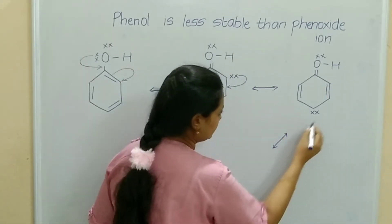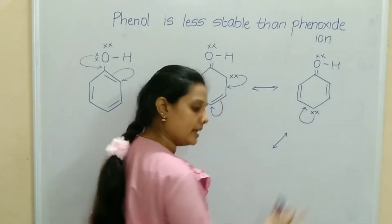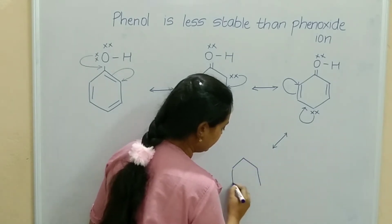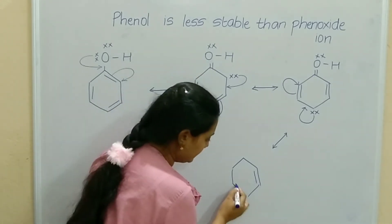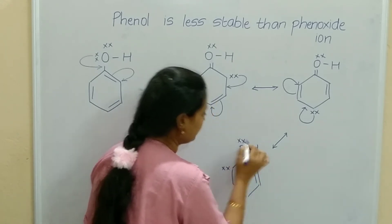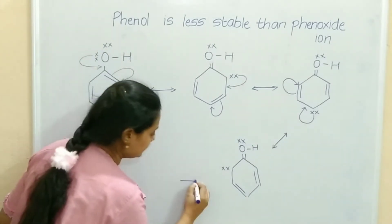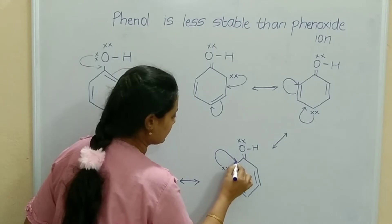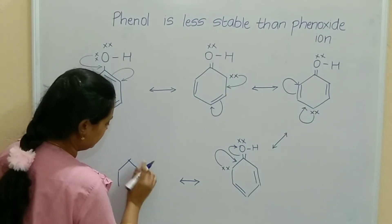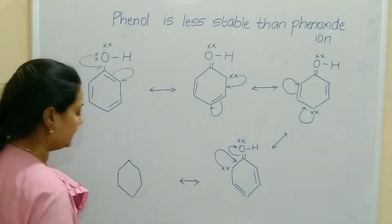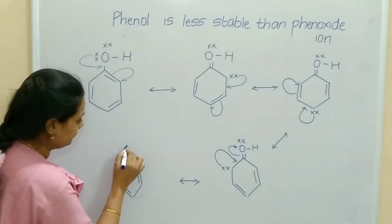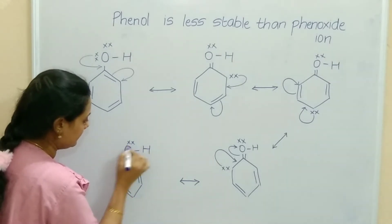Next resonating structure: the electron will go to the side and form a double bond, and the double bond will go to the corner as electrons. Now the resonating structure will be: this bond as it is, here one bond, here one electron pair, and double bond, oxygen, hydrogen, lone pair of electron as it is. The next resonating structure: this electron will come to the side and the bond will form the electron, giving us the benzene ring — two bonds as it is, here one bond, here one single bond, O, H, and one lone pair of electron.